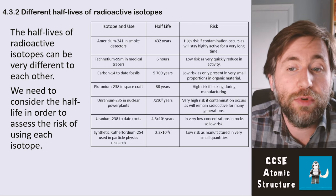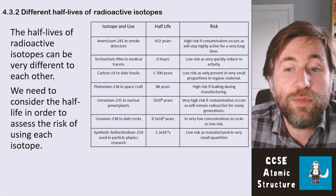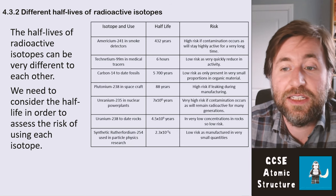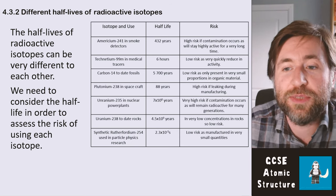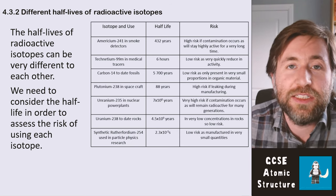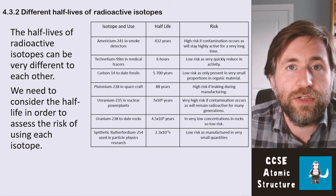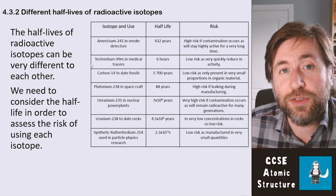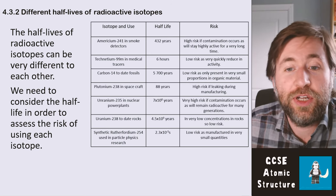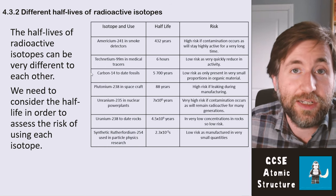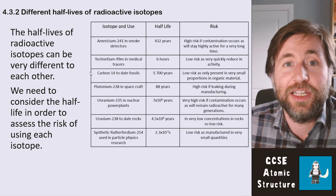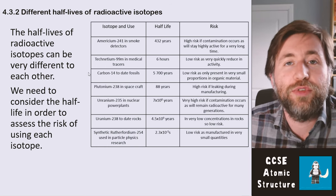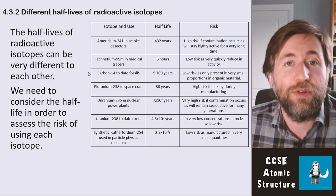Uranium-238 is used to date rocks, rather like carbon dating but for rocks, and has a half-life of 4.5 × 10⁹ years. It's not a very high risk in most circumstances because it is not in high concentrations in most rocks, but a concentrated source — like Marie Curie worked with — would stay radioactive and continue to irradiate for a very long time.